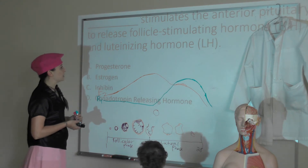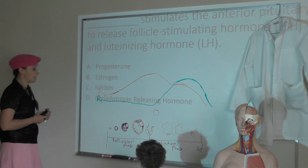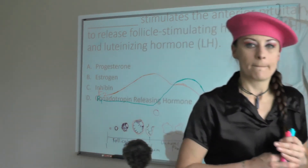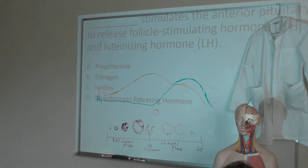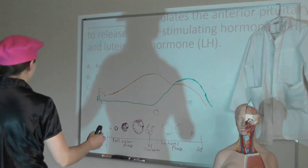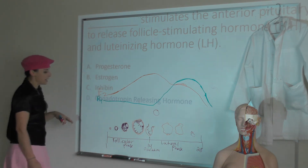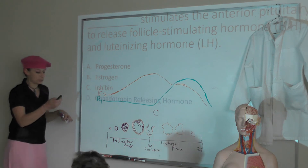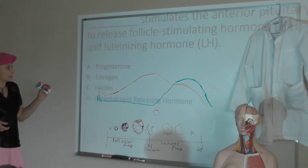Question: Blank stimulates the anterior pituitary to release follicle-stimulating hormone and luteinizing hormone. A: Progesterone. B: Estrogen. C: Inhibin. D: Gonadotropin-releasing hormone. The answer is GnRH — gonadotropin-releasing hormone — which stimulates the release of our gonadotropins FSH and LH. FSH then stimulates follicle development, and LH ultimately increases estrogen by producing androgens that are converted to estrogens by the enzyme that granulosa cells produce.